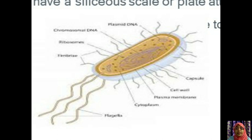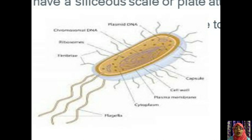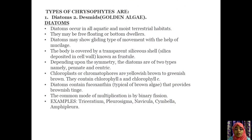In the diagram, you can see the plasmid DNA molecule, chromosomal DNA molecule, ribosomes, fimbriae — small external appendages — cytoplasm, flagella which help in movement, capsule, cell wall, and plasma membrane surrounding the cell. These are the characteristic features of chrysophytes.